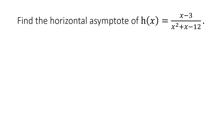Next example: find the horizontal asymptote of h(x) = (x − 3) / (x² + x − 12).